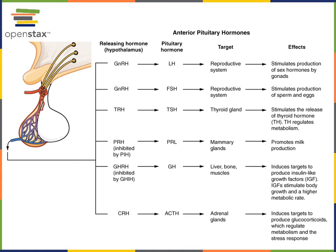T3 and T4 have the effects of increasing the metabolic rate and stimulating the production of heat, warming the body. Adrenocorticotropic hormone, or ACTH, is another tropic hormone produced from the anterior pituitary that stimulates the adrenal cortex to release glucocorticoids. As a long-term response to stress, one of the functions of glucocorticoids is to increase blood glucose levels.